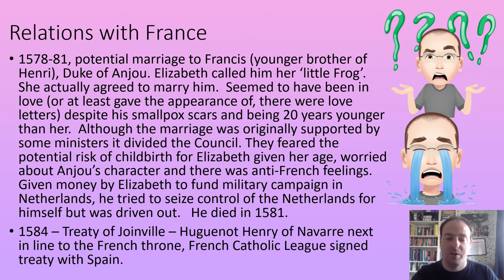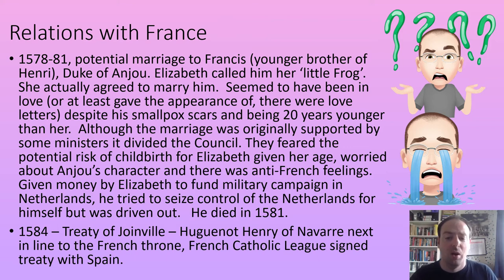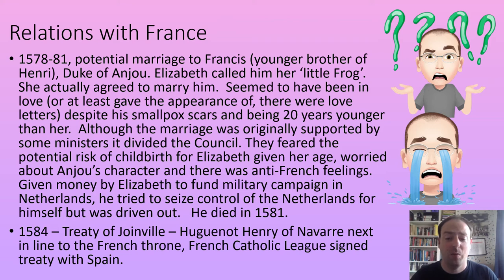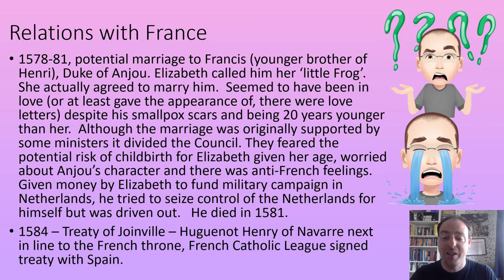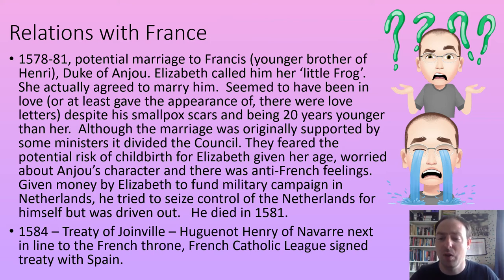The politics behind the Anjou marriage becomes clear: Elizabeth was funding the French to fight the Spanish in the Netherlands to prevent either power dominating the region. Anjou tried to claim the Netherlands for himself but was driven out and died in 1581. Then the Treaty of Joinville saw the French Catholic League — including the Guise family, related to Mary Queen of Scots — sign an agreement with the Spanish. France and Spain getting on together was potentially the worst possible news for Elizabeth.